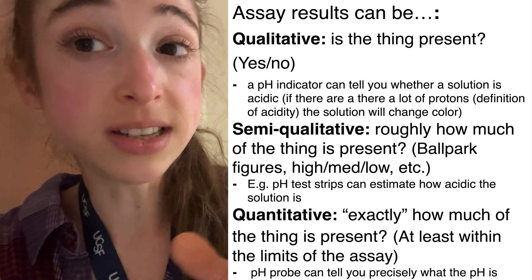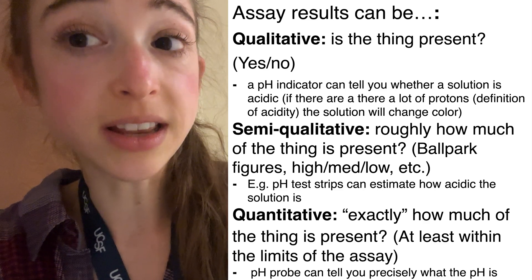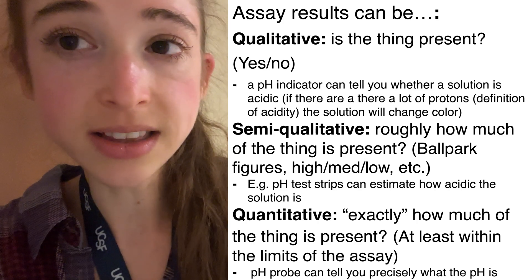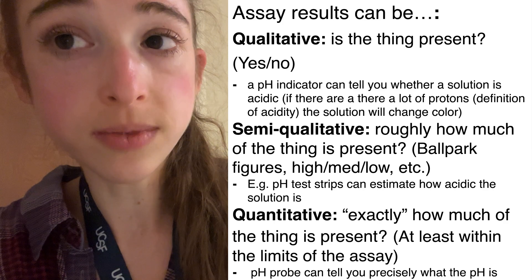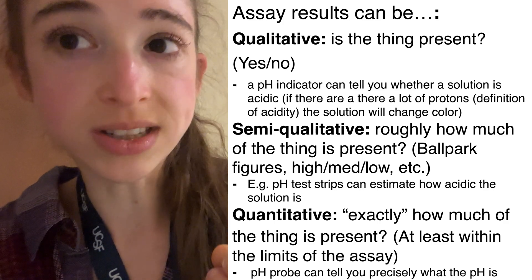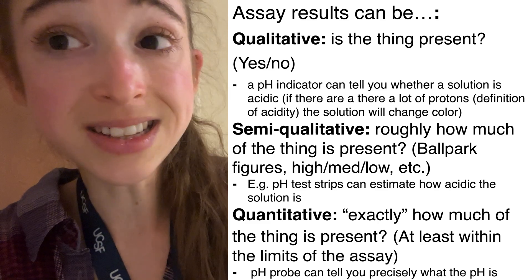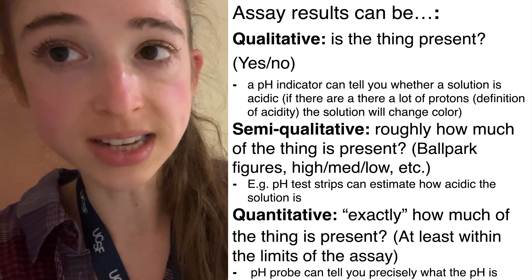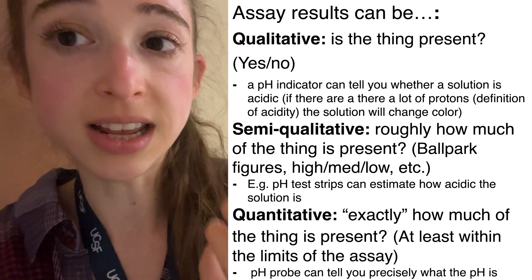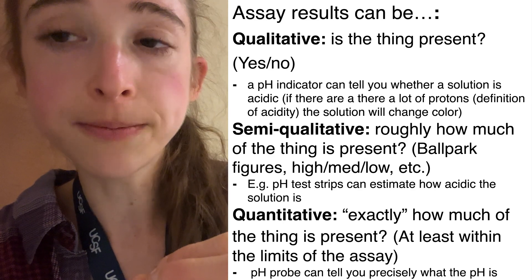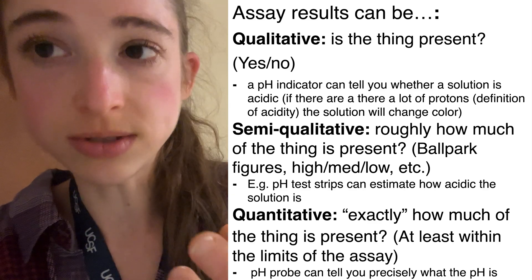Assays, in addition to varying based on what they're measuring, are also going to vary in how they're measuring it — what techniques they use. They'll also vary in the type of results they can give you. Some assays are what we call quantitative. When you hear quantitative, think numbers. With a quantitative assay, you're actually getting a number for the measurement. Whereas with a qualitative assay, it's more just like a yes-or-no type of thing.